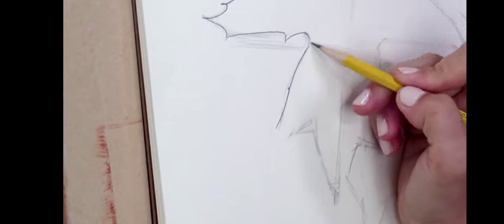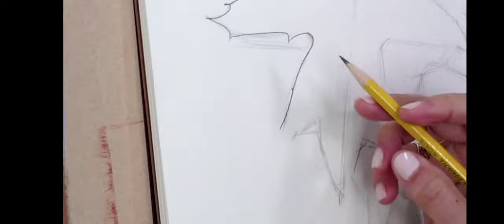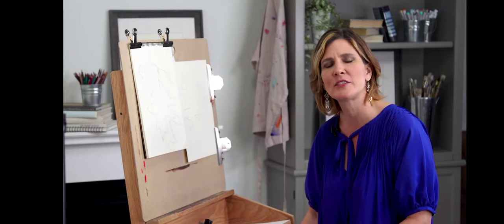We're going to create a clean linear drawing, also known as a contour drawing, on top of our block in. We're going to start paying attention to the details and leaf shape to make the contour.